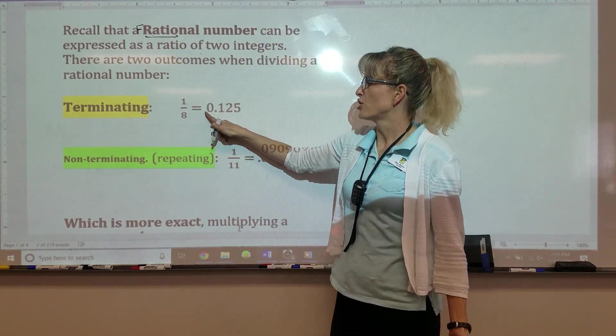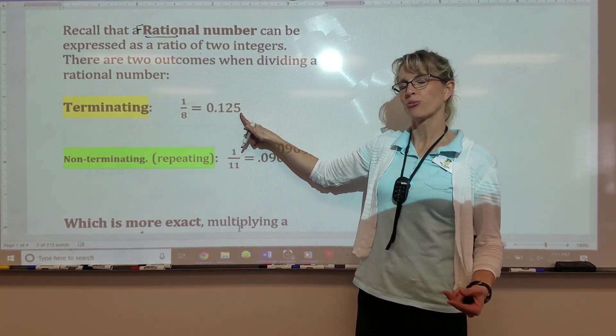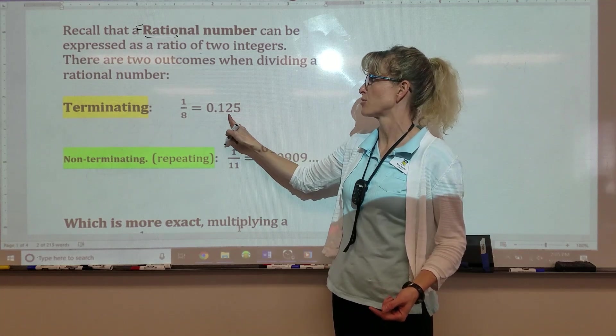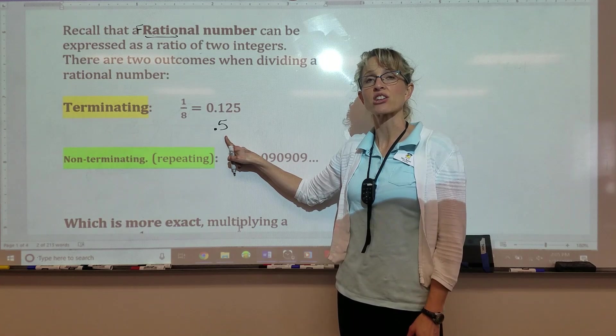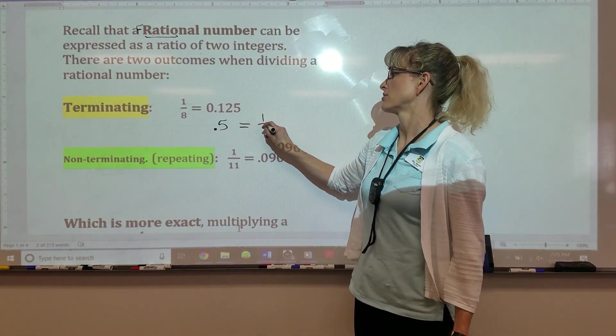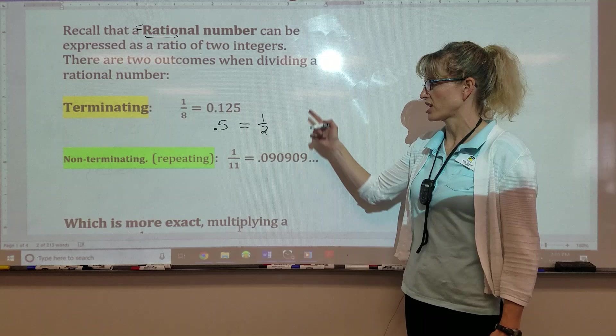So 1 eighth is rational, and if you divided it out, you get a terminating decimal, so don't be tricked. If you see a terminating decimal, all terminating decimals can be turned into a fraction. So 2.5 is terminating. It's equal to one half. That's a ratio, so that's rational.